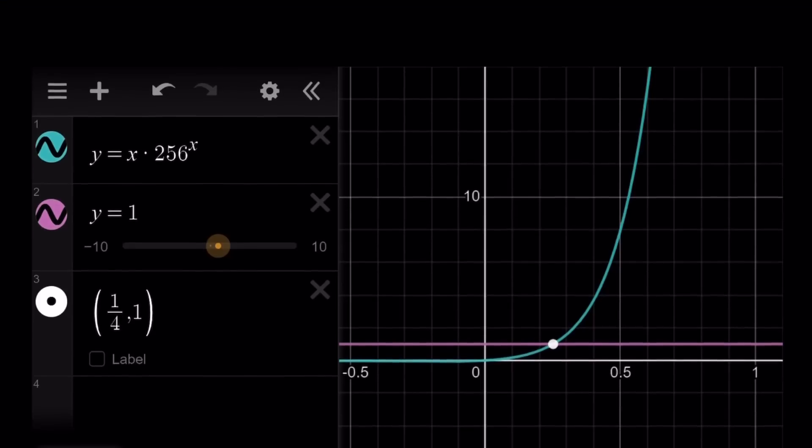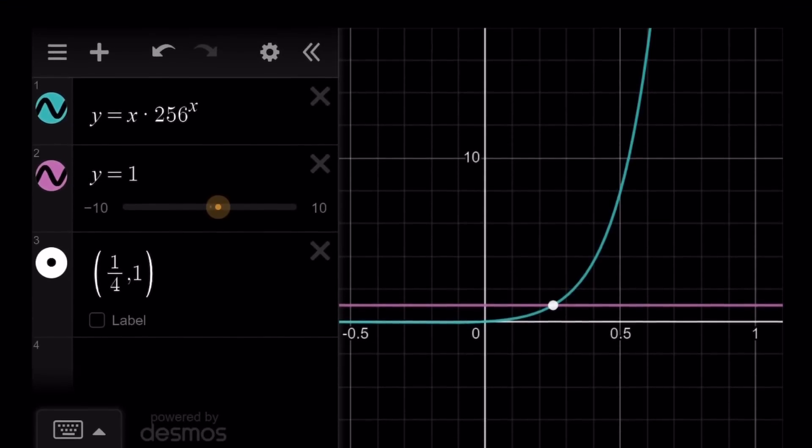So the graph of x times 256 to the power x intersects y equals 1 at a single point. Therefore, there is only one solution. Where does this come from? Let me explain this a little bit. So if you have x times 256 to the power x, and I'm going to go back to the graph. I don't know why the software does this sometimes.